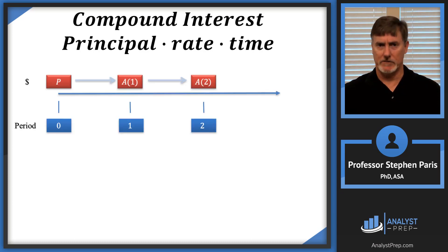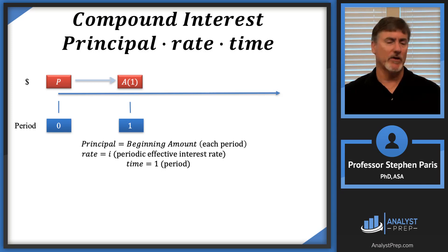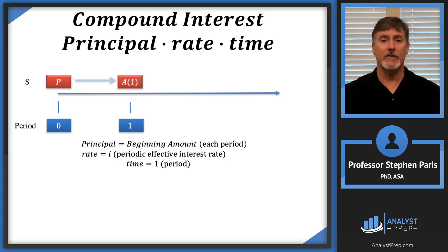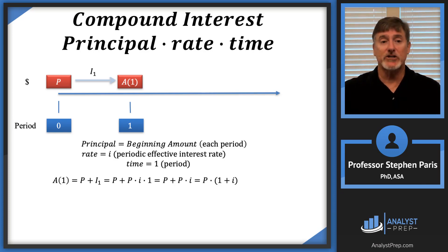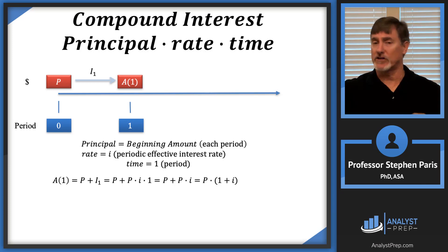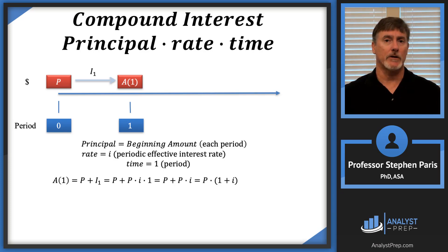Let's look at a two-period timeline again. Focusing on the first period: the principal is the beginning-of-period amount, which is the capital P value. The rate is I and the time is one. So the amount at time one is P plus the interest earned in the first period, which is P × i × 1 = Pi. The expression after the first period looks very similar to the simple interest scenario. Note that I don't necessarily have to be in years in this context.